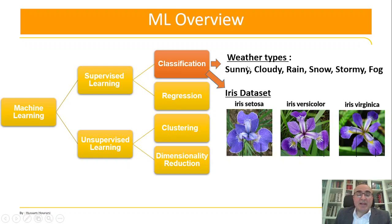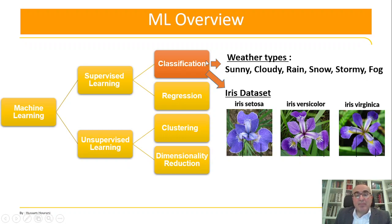For example, if we talk about weather types, tomorrow might be sunny, cloudy, rainy, snowing, stormy, or foggy — so we have six classes and we can pick one of them. Today we're going to do classification on the iris dataset.